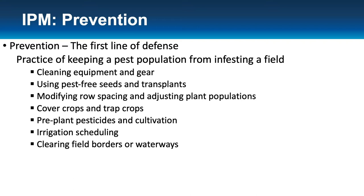Modifying row spacing and adjusting plant populations can prevent weeds — with really close row spacing, your crop canopy fills in and stops weeds from coming in. For the soybean gall midge, Adam mentions that with a higher density of soybean plants, the stems are smaller, and since the gall midge goes into the stem, if it's too small for them to get into, you basically prevent that pest from infesting your field.